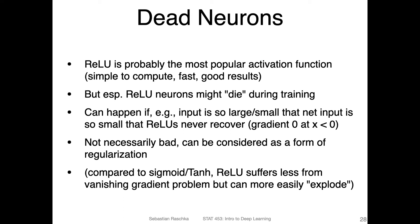A few more things: we can also use the ReLU activation function, which is very popular — you can try it in the code notebooks. It's probably the most popular activation function, and I use it all the time for most of my work because it works well usually. However, theoretically there's a problem that it might have this dead neuron problem.